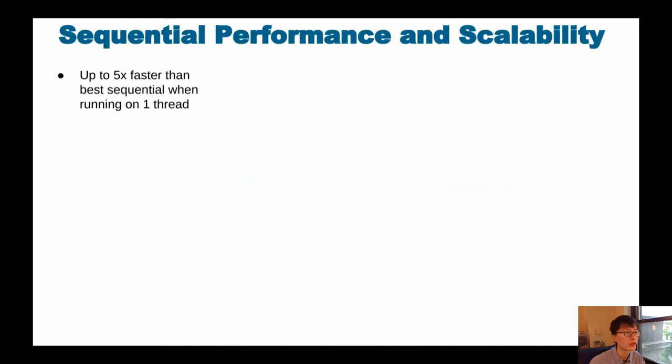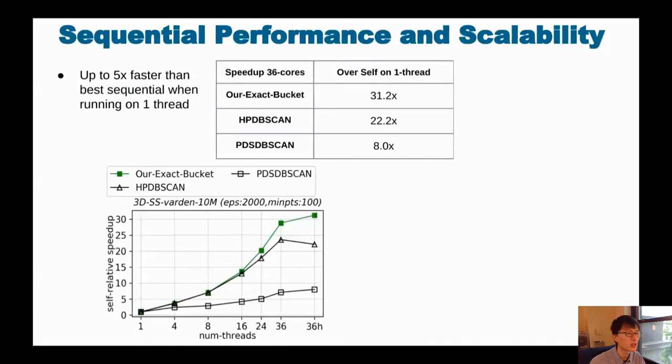Our implementation shows good speedup over both existing sequential and parallel implementations. And when our algorithm is running on a single thread, we are up to five times faster than the best sequential implementation. And in parallel, we have additional speedups. As shown by the plot here, the x-axis shows the number of threads and the y-axis shows the self-relative speedup, meaning the speedup over the same method running on a single thread. So our method is shown in the green line, which is higher than the baselines and the competitors shown in the black lines.